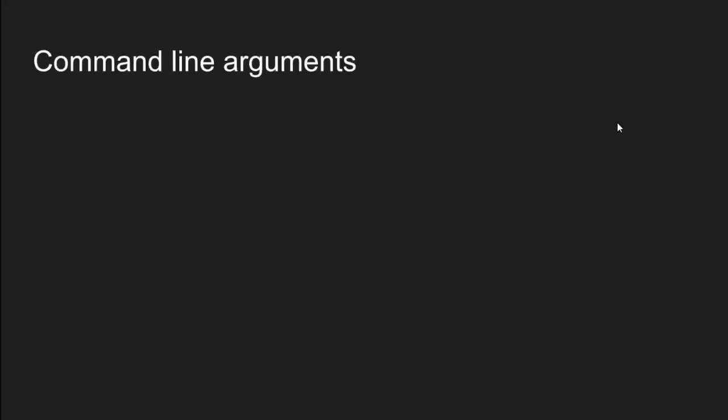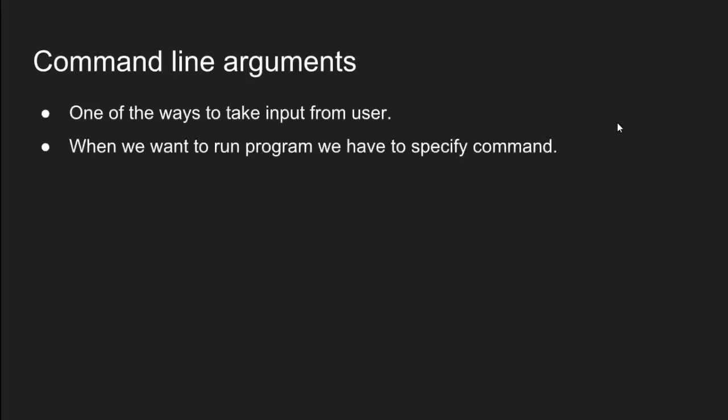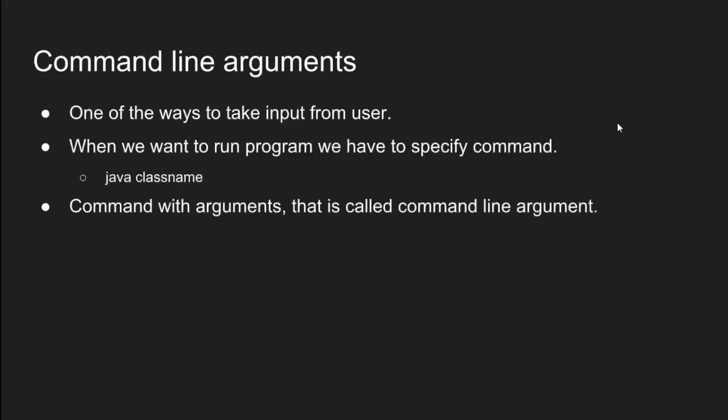Before starting the actual program I would like to take a few minutes on command line arguments. Command line argument is one of the ways to take input from the user. You can also provide configuration to the program. When we want to run a program we have to specify a command. The command is java space class name.